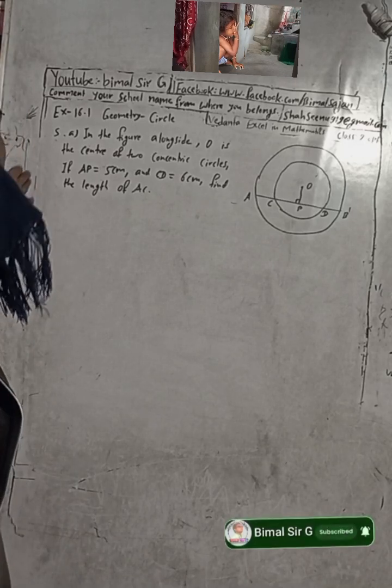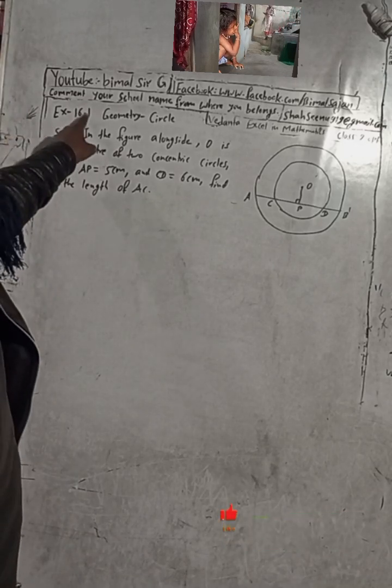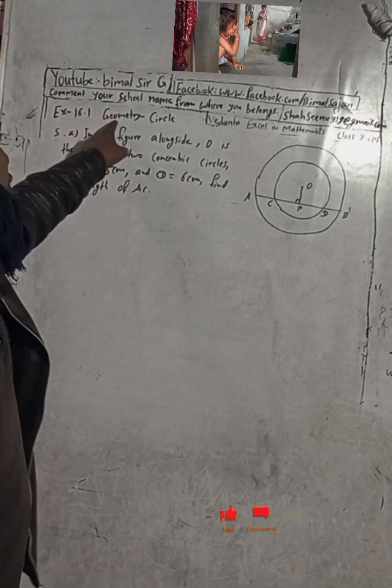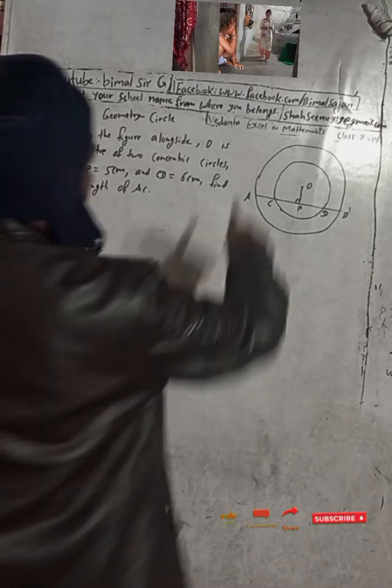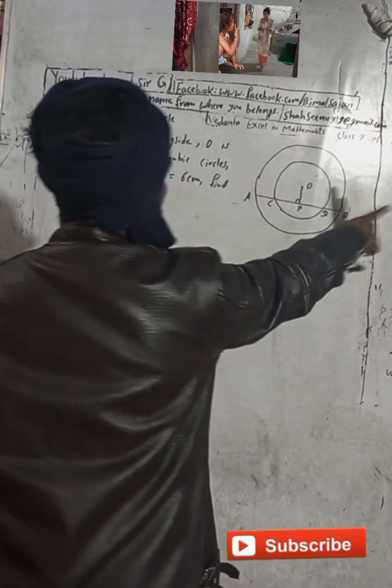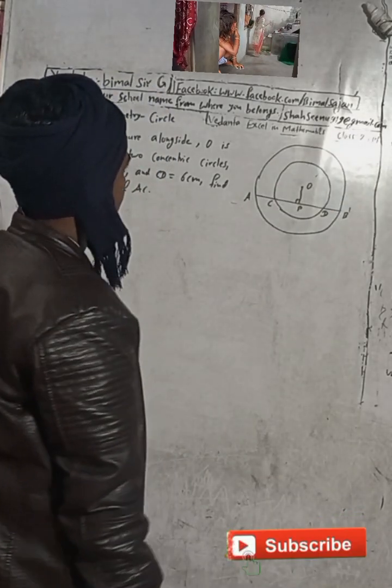This is question number 5A, exercise 16.1, geometry circle, from Beyond Excel in Mathematics, class 9.